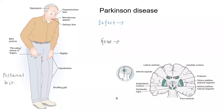Hello friends. In this video I am going to discuss about Parkinson's disease. Parkinson's disease is a prototype example of a hypokinetic movement disorder. The basic defect in Parkinson's disease is loss of dopaminergic neurons in the substantia nigra. Because of the loss of these dopaminergic neurons, there will be hypokinesia.